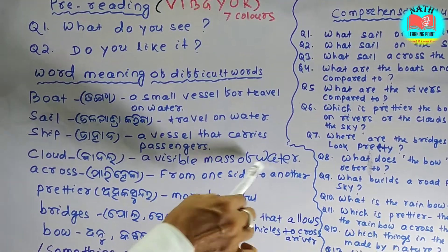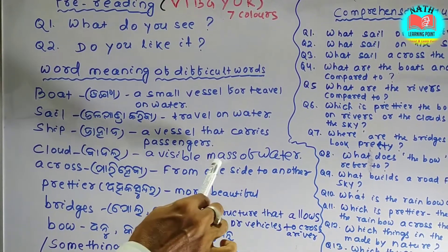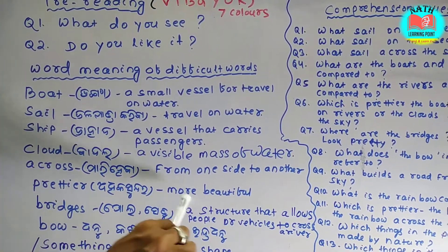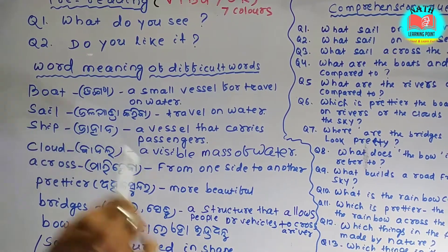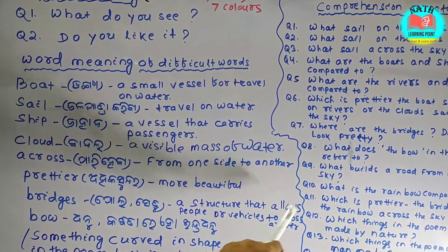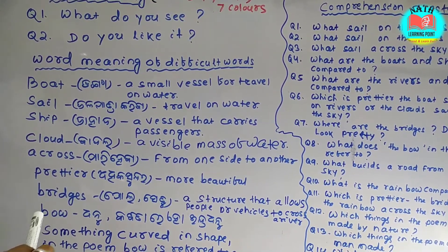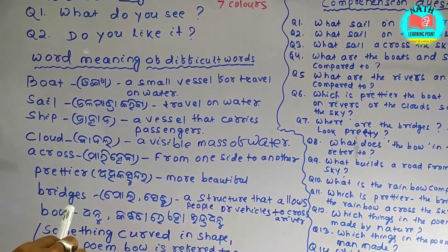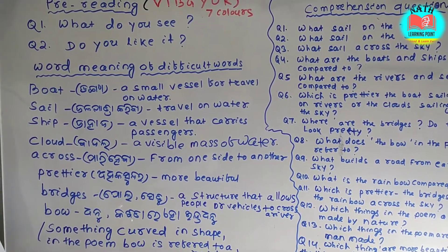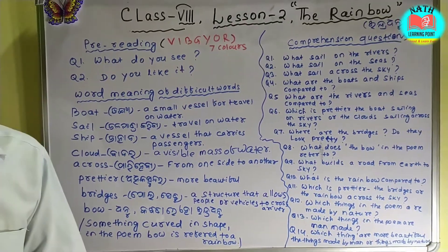Cloud means a visible mass of water vapor. Prettier means more beautiful — adhika sundara. Bridges means a structure that allows people or vehicles to cross a river. Bow means something curved in shape. In the poem, bow is referred to a rainbow.